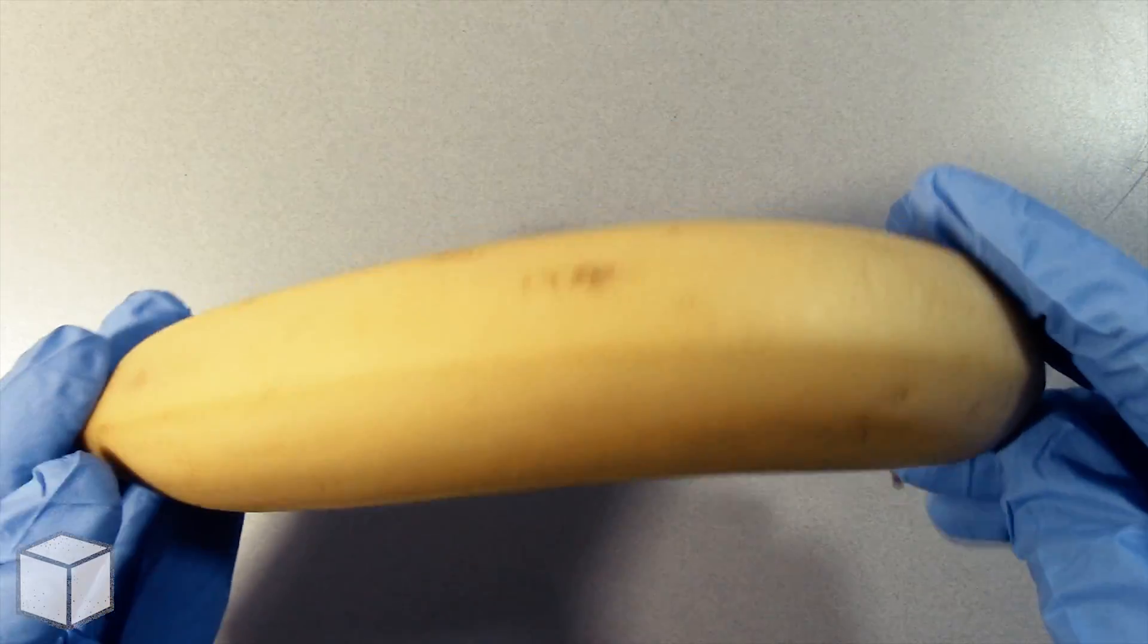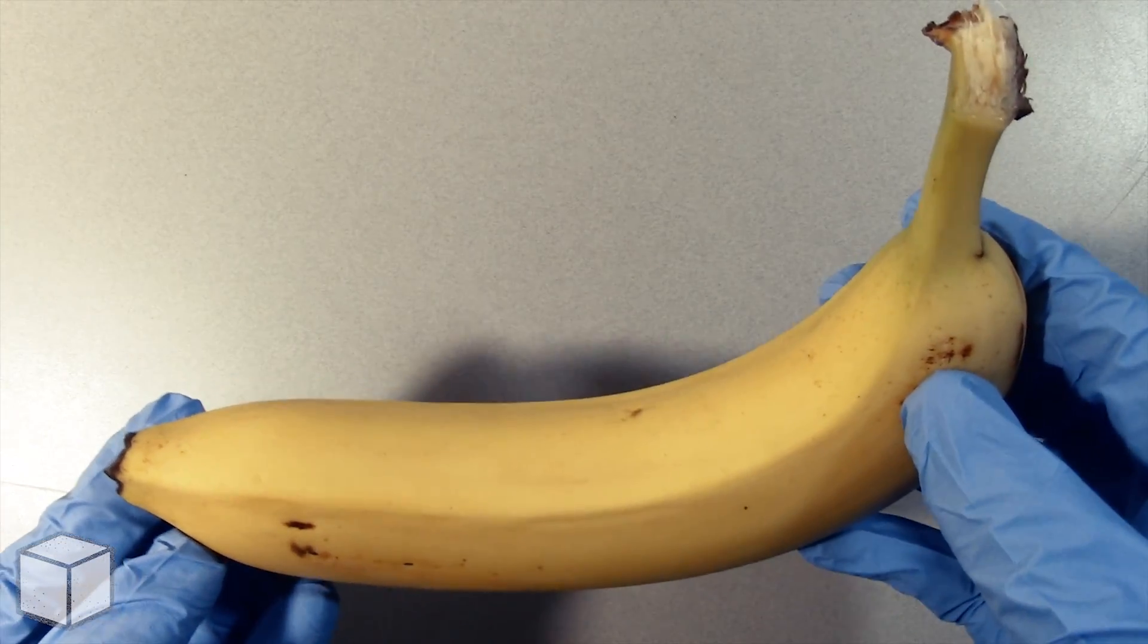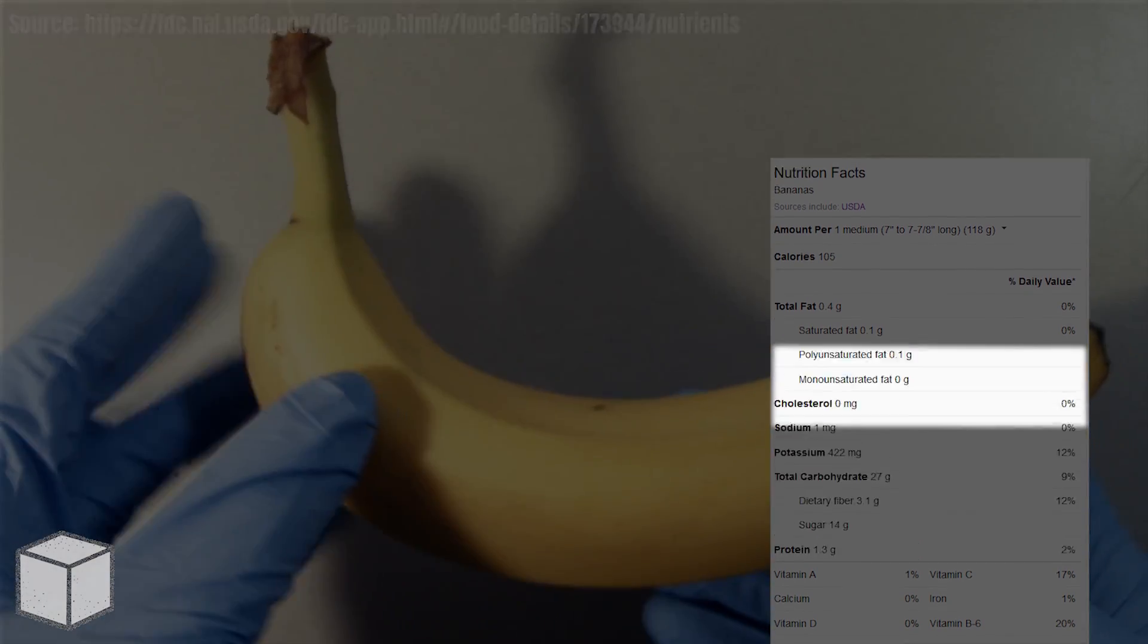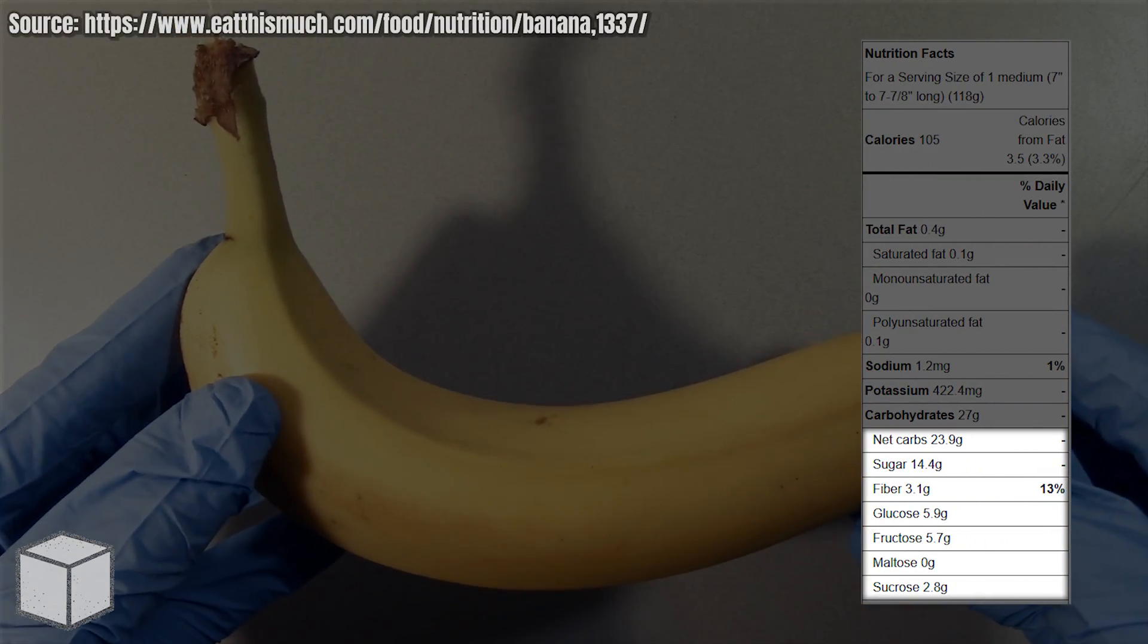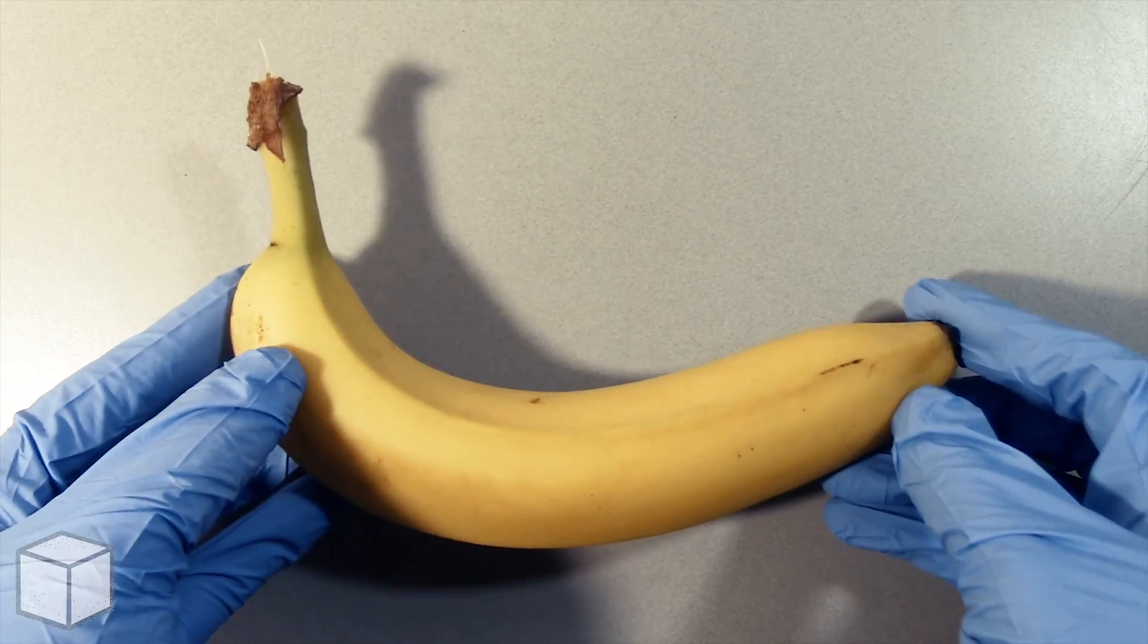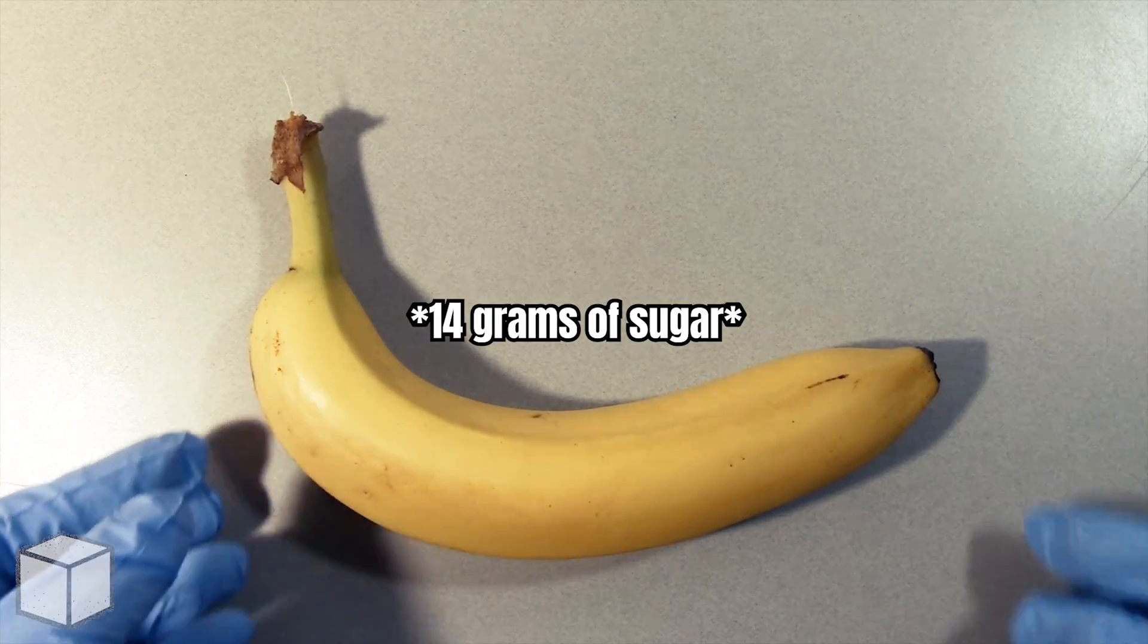Of course fruits don't have a nutrition label on them but with a quick internet search you can easily discover the estimated sugar content. And as you can see highlighted from these two sources, this medium-sized banana can have around 14 grams of natural sugar.